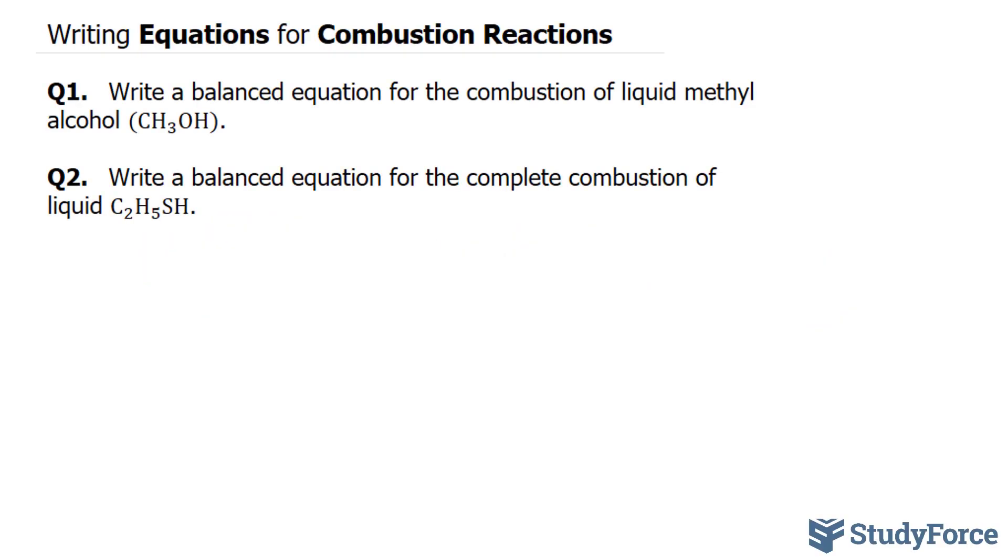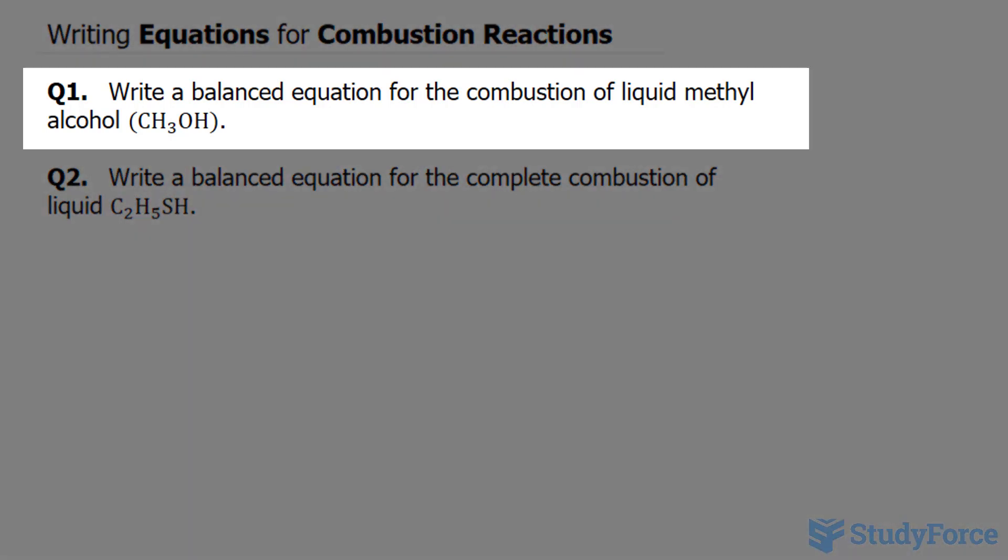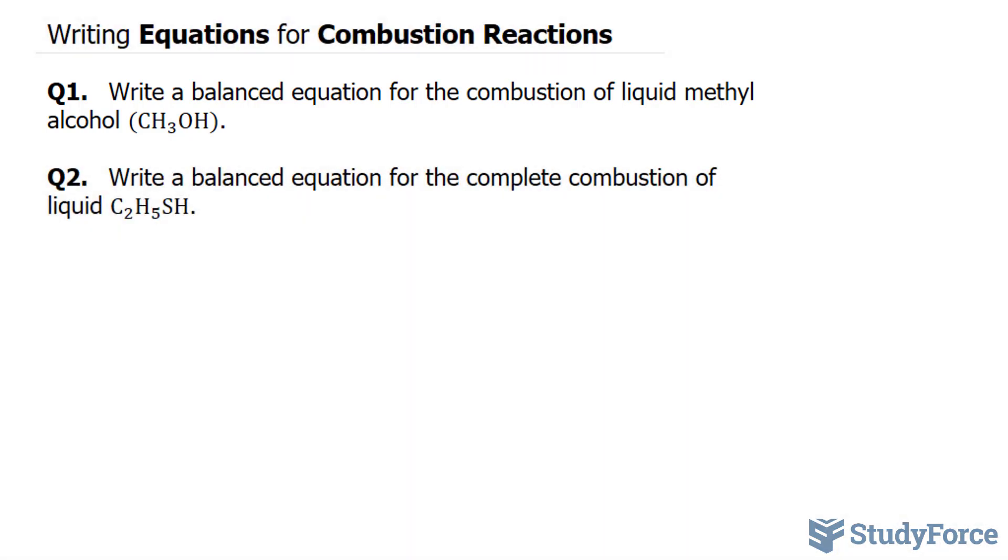In this lesson, I'll show you two examples on how to write equations for combustion reactions. Question 1 reads: write a balanced equation for the combustion of liquid methyl alcohol. That's its chemical formula. In a combustion reaction, what you have is a fuel reacting with oxygen gas, and this forms water vapor and carbon dioxide gas.